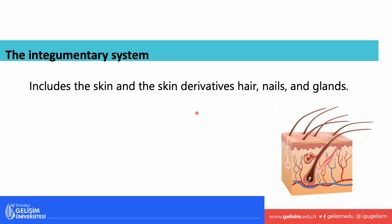Another term for this system is the integumentary system. When you're talking about the integument, we're talking about not just the skin, but everything else that we find in the skin as well — so that includes hair, our nails, as well as glands such as your oil glands and your sweat glands. These are all part of your integumentary system.